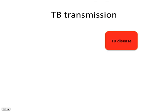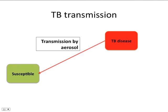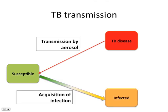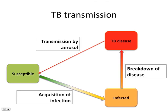TB is transmitted from people with active TB to susceptible individuals. Transmission occurs through aerosols generated by cough. Infection occurs from inhalation of the TB germ Mycobacterium tuberculosis, and most often nothing else happens. But in 5 to 15% of individuals, the TB germ further multiplies and TB disease develops. The time between infection and disease may range from a few days to several decades.